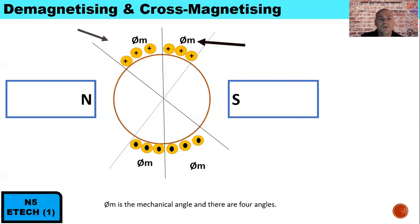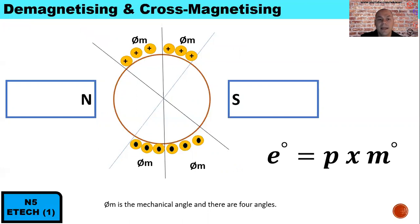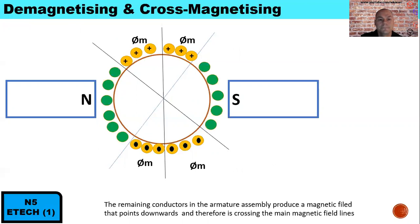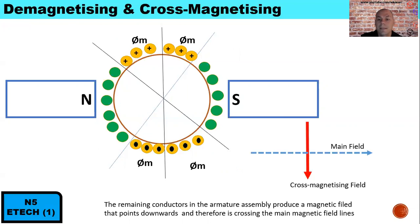There are four quadrants where we have our mechanical angle. Phi-m represents the mechanical angle. To calculate the electrical angle, it will be the mechanical angle multiplied by the number of pole pairs. The remaining conductors in the armature assembly produce a magnetic field that points downwards, crossing the main magnetic field lines — this is cross-magnetizing, crossing over the main lines of flux running from north to south.